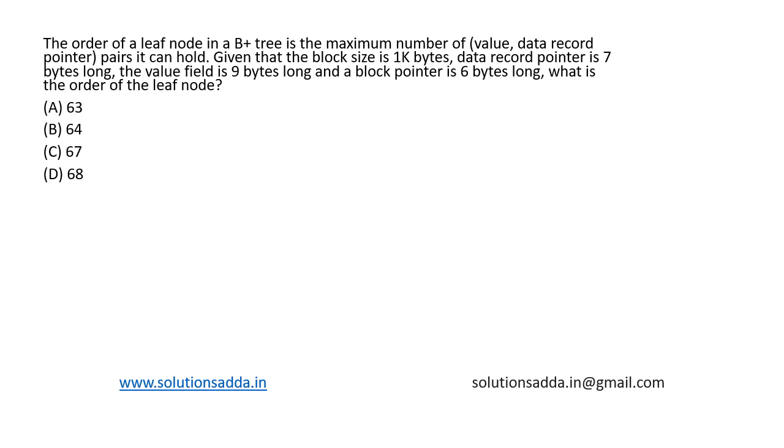Given that the block size is 1 kilobytes, data record pointer is 7 bytes, the value field is 9 bytes long, and block pointer is 6 bytes long, what is the order of the leaf node?